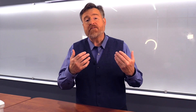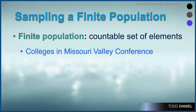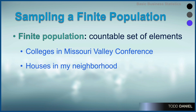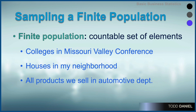For example, a finite population would include all colleges in the Missouri Valley Conference — there's a limited number of colleges, so they are countable. Another example of a finite population would be all of the houses in my neighborhood. We're able to distinguish which houses are included in my neighborhood versus those which are not. Or a larger finite population might be all of the various products that we sell in the automotive department of our store.